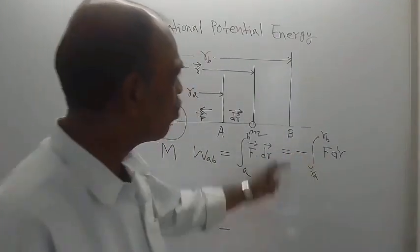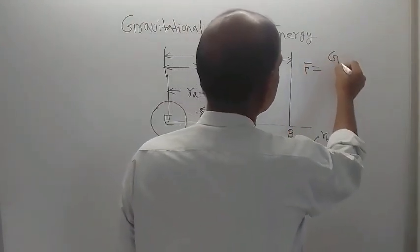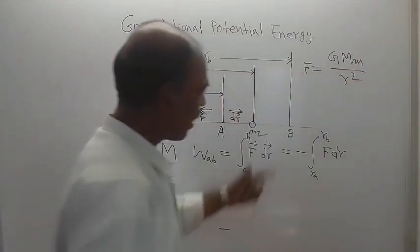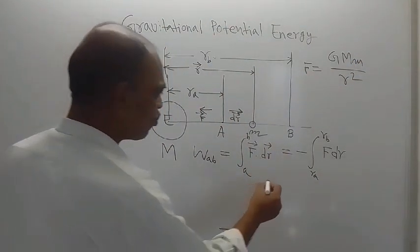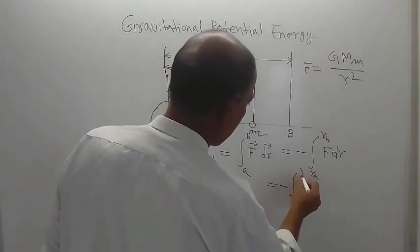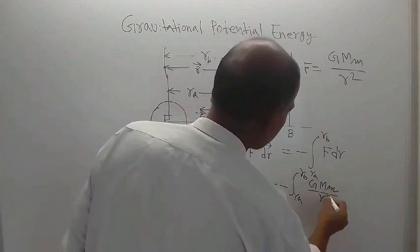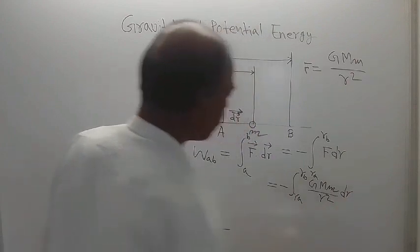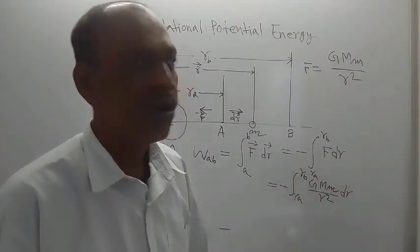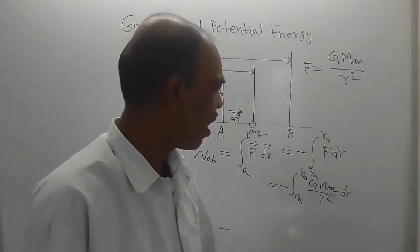Since F and dr are in opposite directions, we put a negative sign before the integration. We know the expression for F: it is equal to G capital M small m divided by R squared. That is known to us. So, just by using that, we can easily evaluate the integral from Ra to Rb of G capital M small m by R squared dr. The integration is easy — G, capital M, and small m are all constants, and the only variable is R.